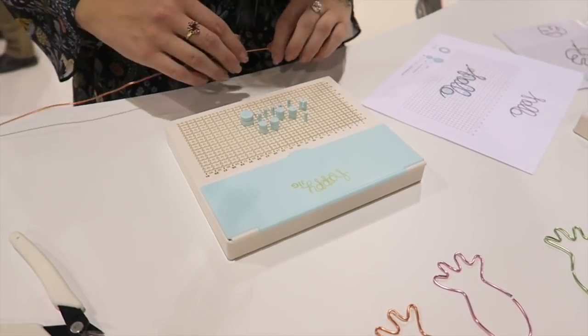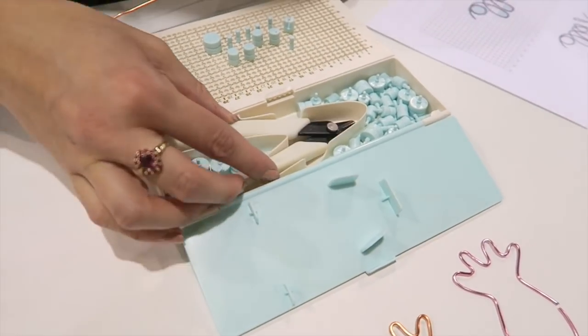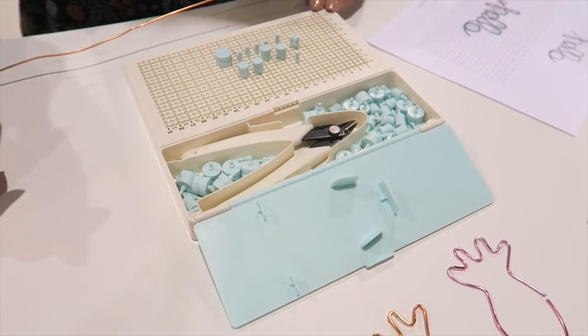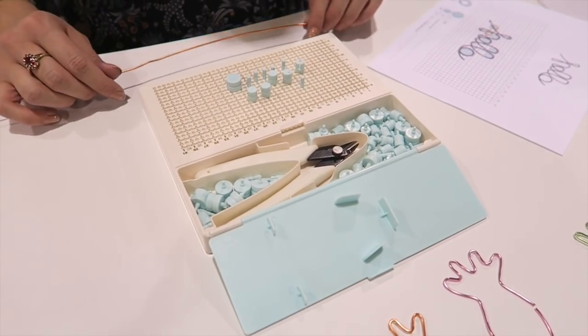So this is the We Are Happy Jig and it is our wire bending kit. It comes with 100 pieces, 95 pegs, wire cutters, and three different colors of wire.